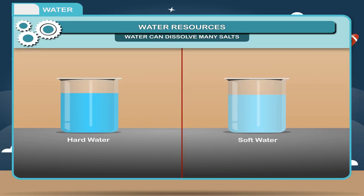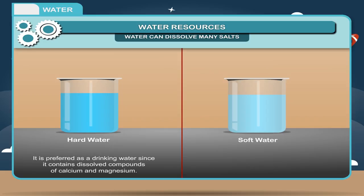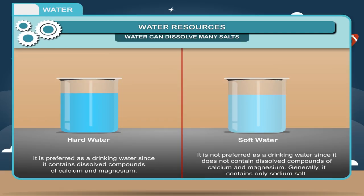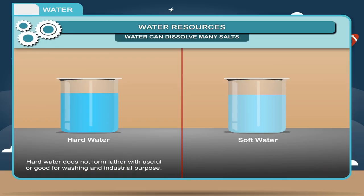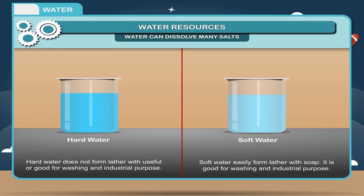Hard water is preferred as drinking water since it contains dissolved compounds of calcium and magnesium. Soft water is not preferred as drinking water since it does not contain dissolved compounds of calcium and magnesium and generally contains only sodium salts. Hard water does not form lather easily with soap and is not good for washing and industrial purposes. Soft water easily forms lather with soap and is good for washing and industrial purposes.